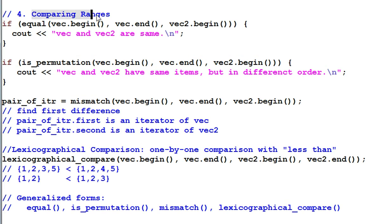Number 4. Compare ranges. Function equal checks if vec and vec2 are the same. Is permutation checks if vec2 is a permutation of vec. Mismatch finds the place where vec and vec2 are different. It returns a pair of iterator which points to the place of difference. Lexicographical compare does a one by one comparison with certain less than operation. And it does the comparison from beginning to the end until the first item of difference is found. And then it decides which one is less by comparing the item of difference.